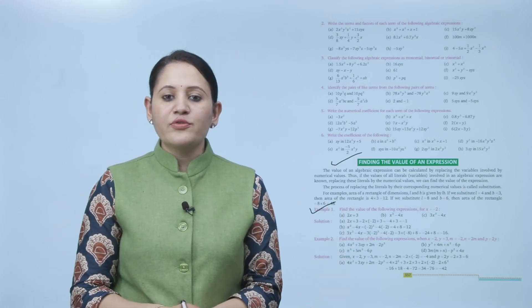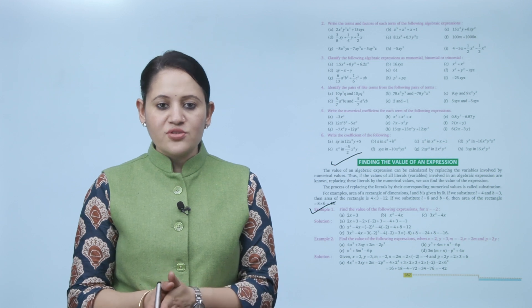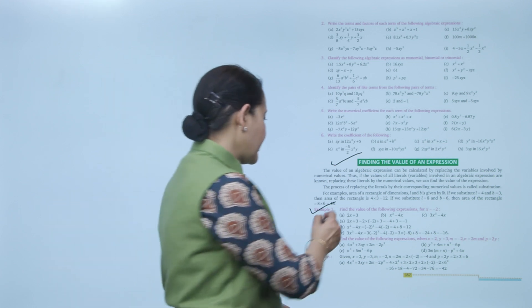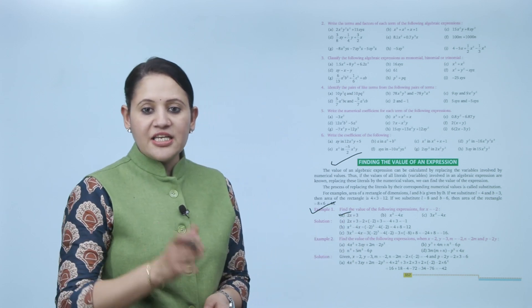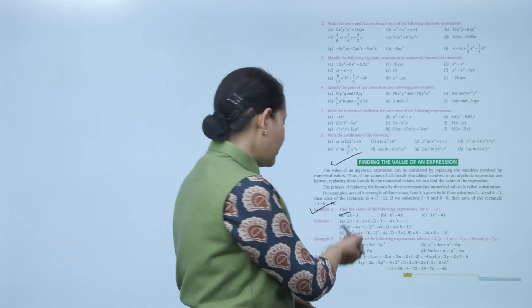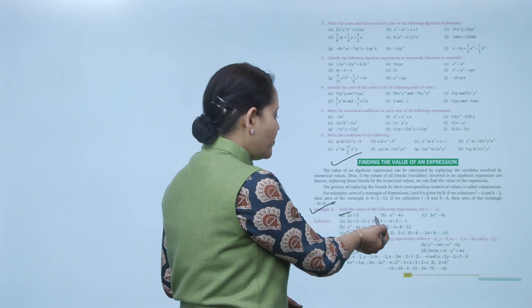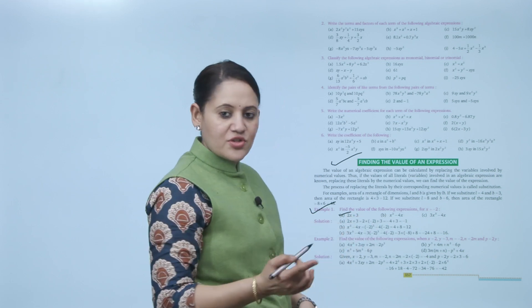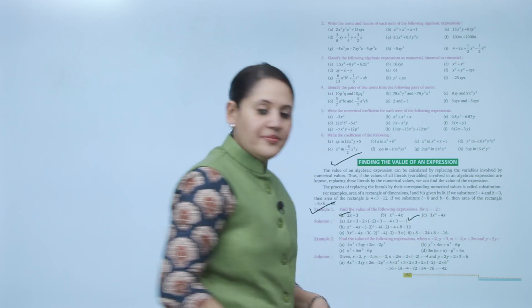Now we'll take an example. Find the value of the expression 2x + 3 for x = −2. We put x = −2: 2 × (−2) + 3 = −4 + 3 = −1. So the value of 2x + 3 for x = −2 is −1.